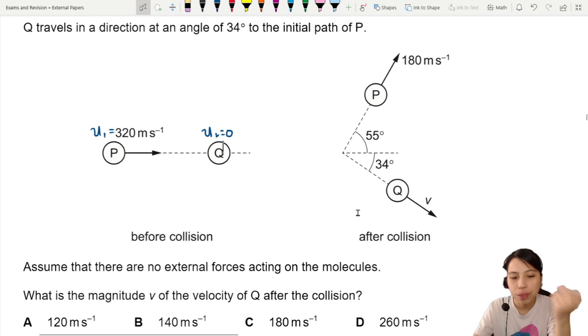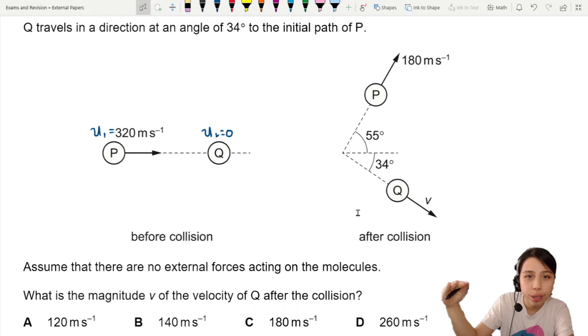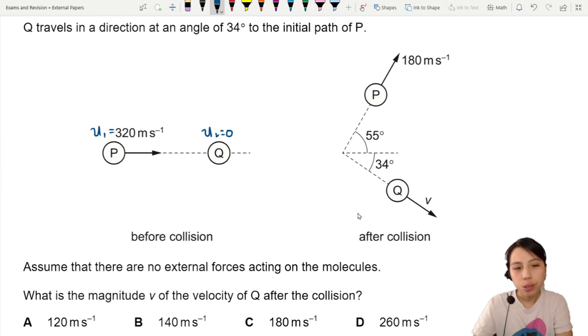What is the magnitude of V after the collision? Whenever you see collision, you need to think of conservation of momentum. But in this case, since it's two dimension, you need to think of horizontal momentum and vertical momentum. So let's look at the horizontal momentum first.